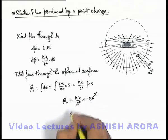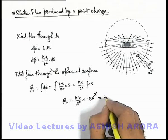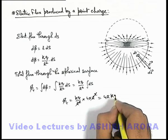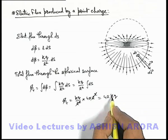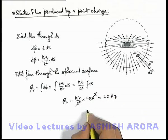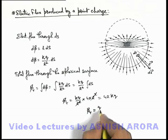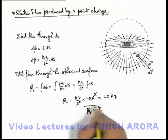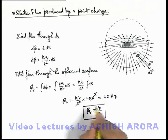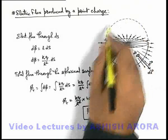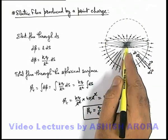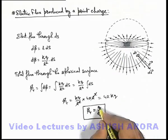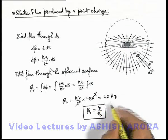Here you can see this r² gets cancelled out, and the result is 4πkq. If we substitute k as 1/(4πε₀), the total flux will be q/ε₀. This is the total flux coming out from the spherical region which is enclosing the charge q.